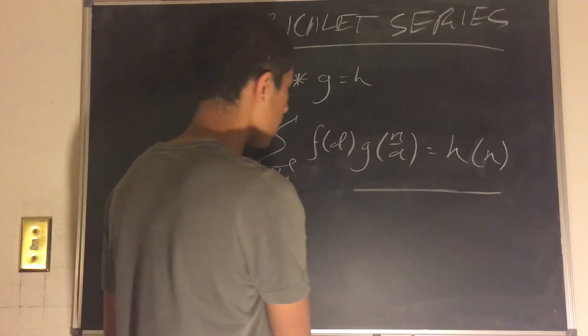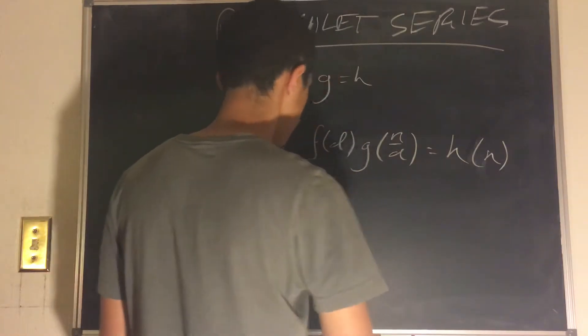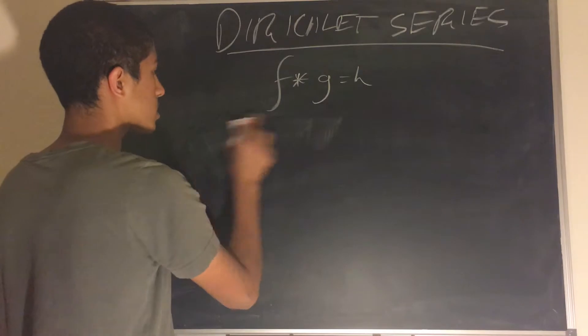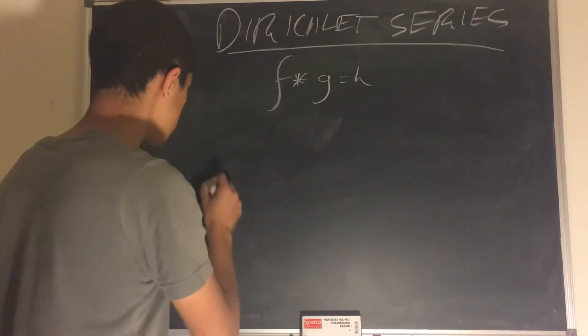We can ask ourselves, what happens when we take such a convolution and we try to make Dirichlet series out of each of these functions? Well, let's do that.